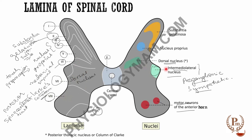The intermediolateral nucleus in lamina seven — the lateral horn cells — gives rise to preganglionic sympathetic fibers. These go through the ventral ramus, then through the white rami, to the sympathetic ganglion. Lamina nine forms the ventral horn, containing motor neurons — motor fibers for flexors and extensors are all present in lamina nine. Lamina ten is the area around the central canal.